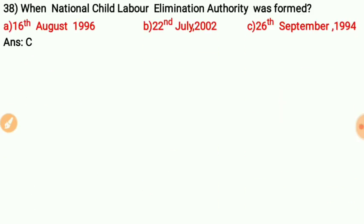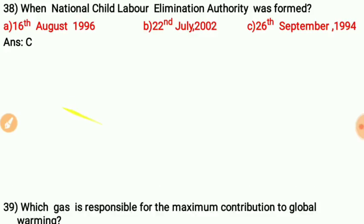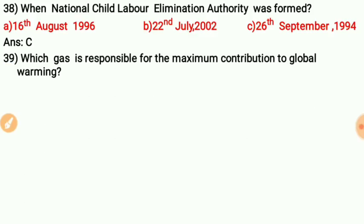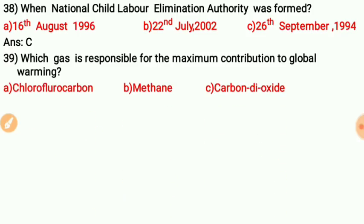Question thirty-six: When was the National Child Labor Elimination Authority formed? The correct answer is C — 26th September 1994. Question thirty-seven: Which gas is responsible for the maximum contribution to global warming? The answer is C — carbon dioxide.